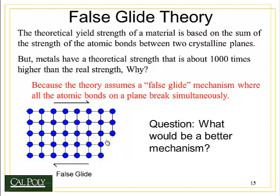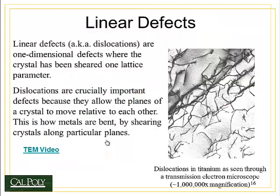Before we talk about that better mechanism, let's look at what are called linear defects, also known as dislocations. Dislocations are one-dimensional defects — they're lines of atoms that are in the wrong place at the wrong time. What's happened is the crystal has been sheared one lattice parameter, or one unit cell, to create an extra plane of atoms that shouldn't be there.